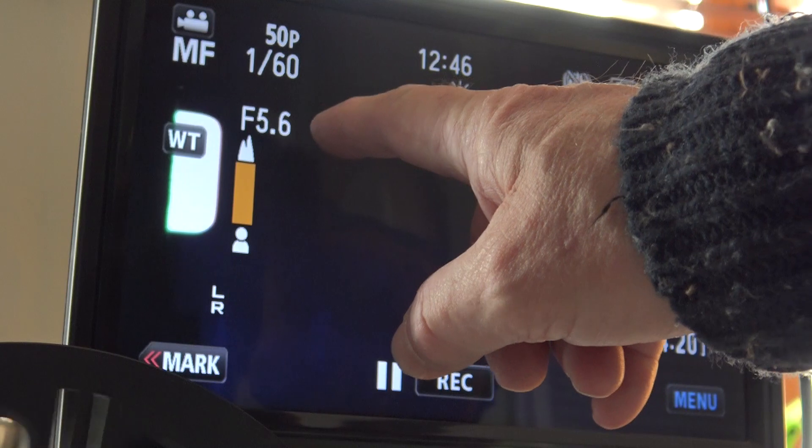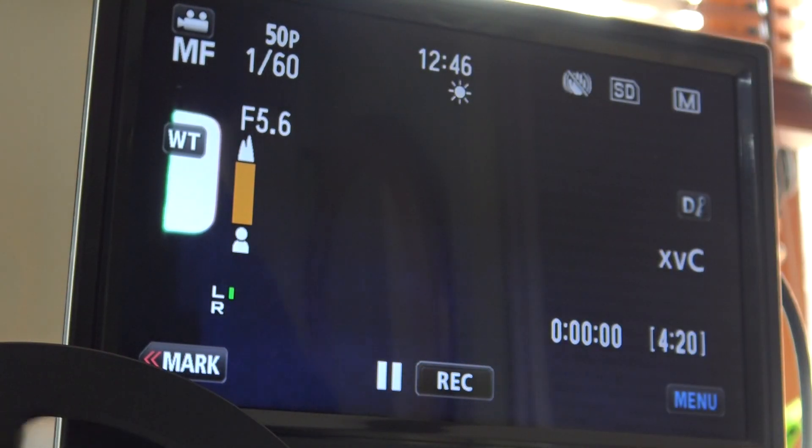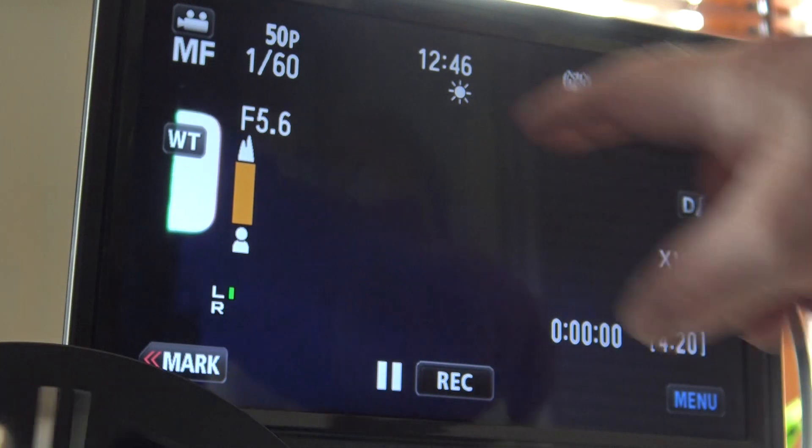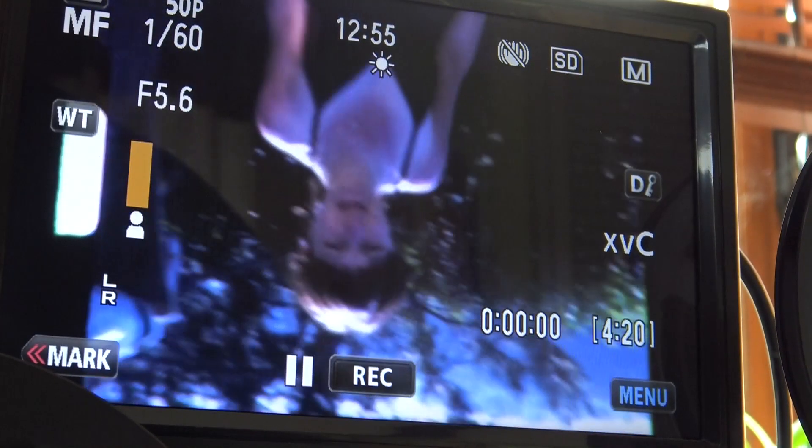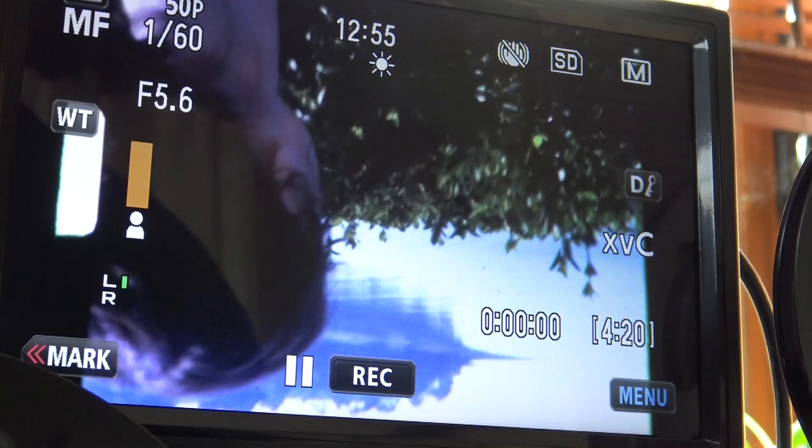The iris is set at 5.6, so I adjust the exposure on the LED lamp dimmer. I've got the shutter speed set at 1/60th. And I'm running the projector at about 20 frames a second to get rid of any strobe. And expose it with the dimmer, the LED dimmer.